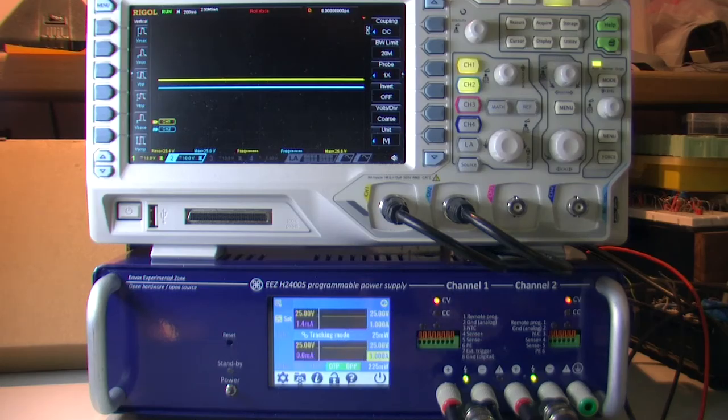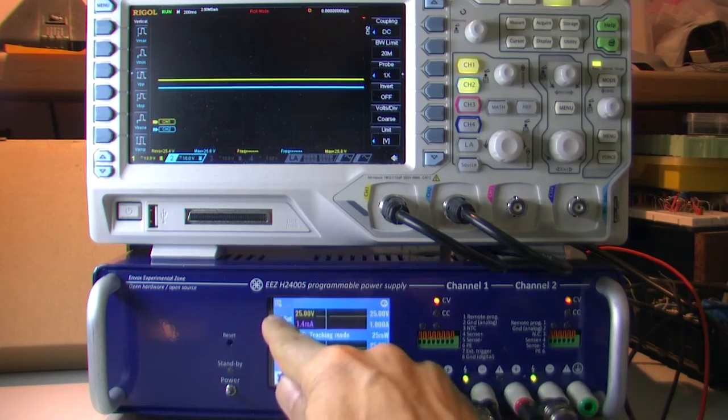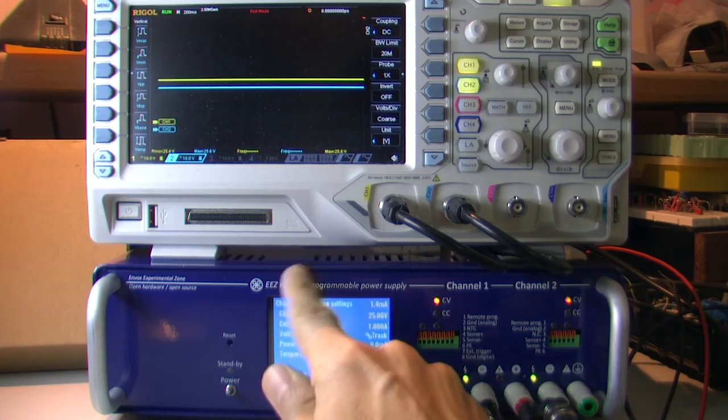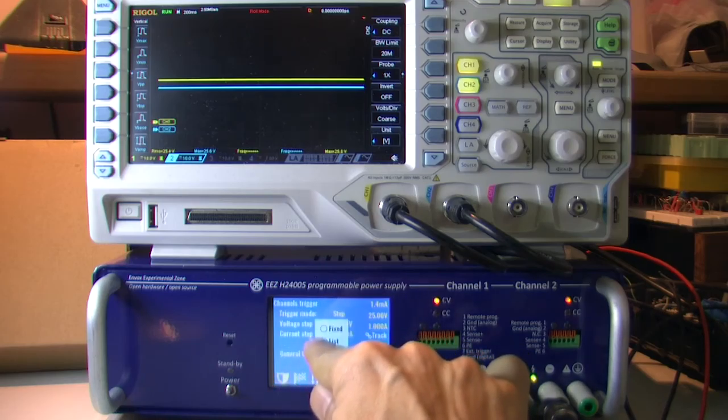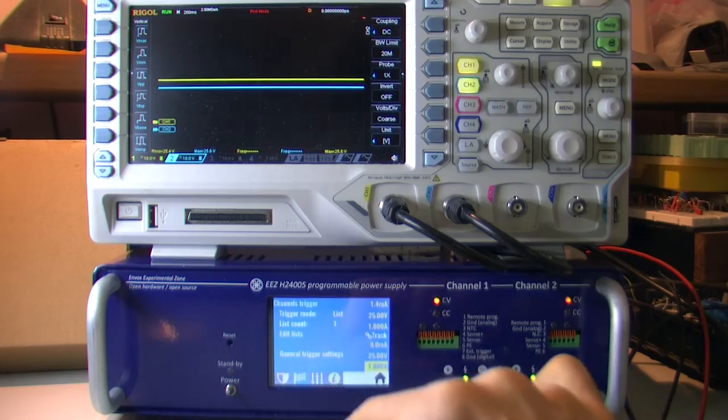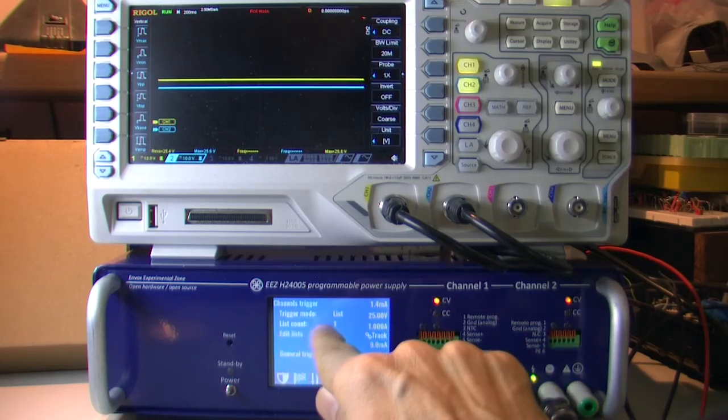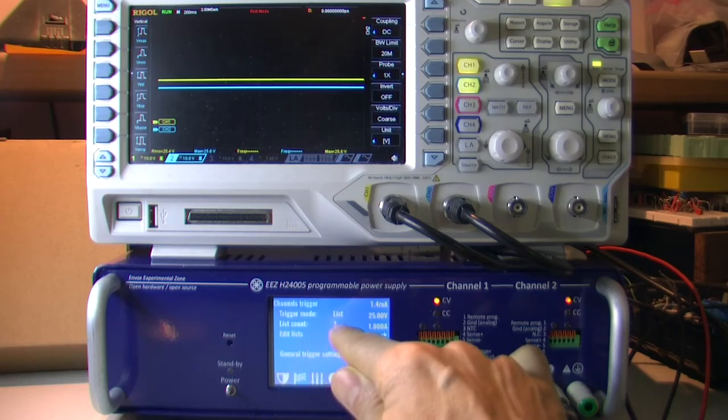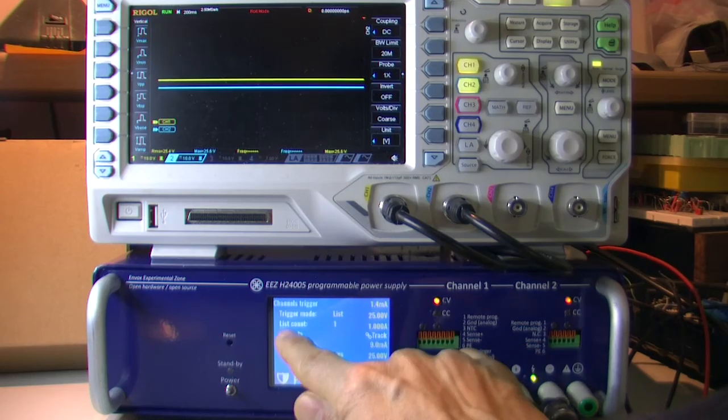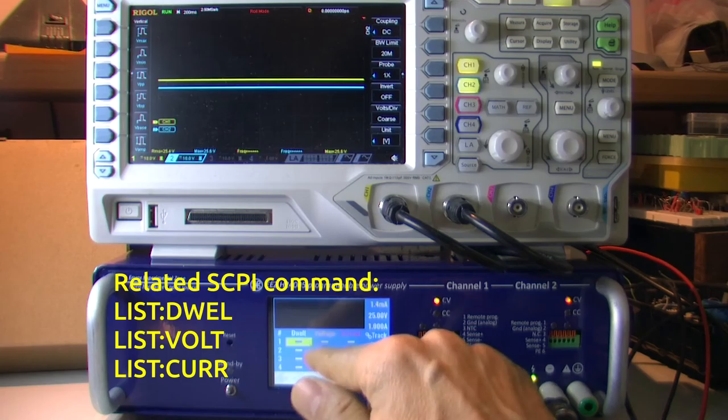So let's try to see. We're still in tracking mode, doesn't matter. Just go with list. List count default is 1. That defines how many times the list will be executed. And let's start with the list.